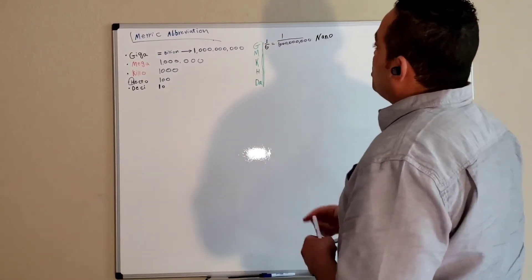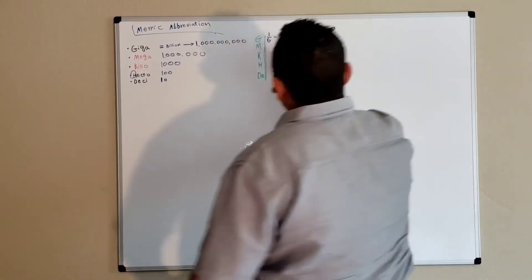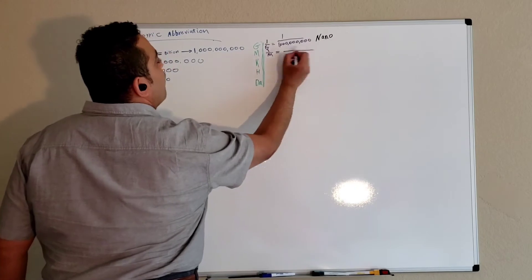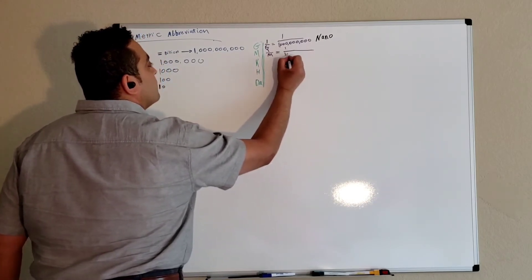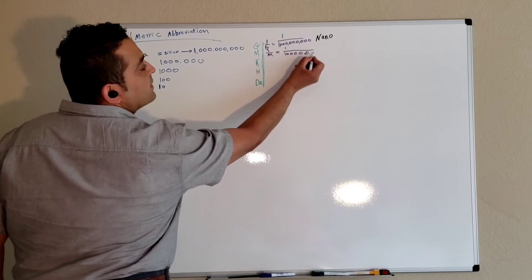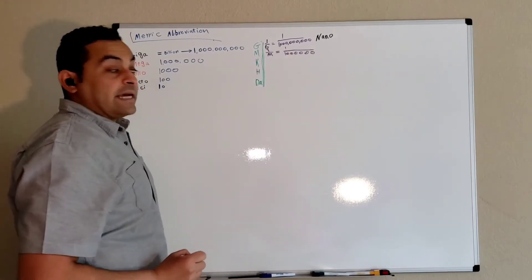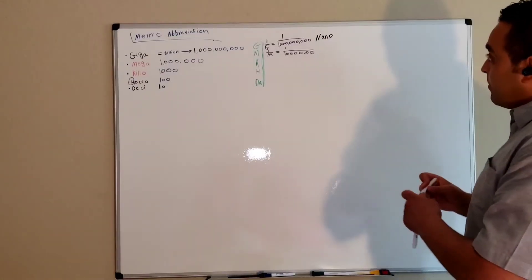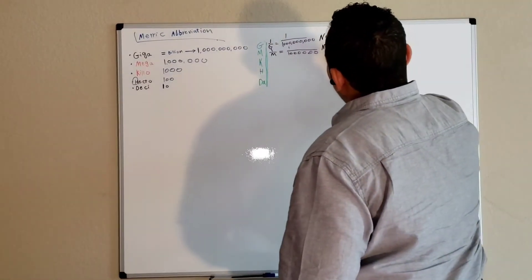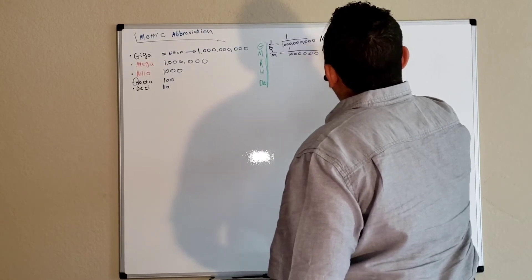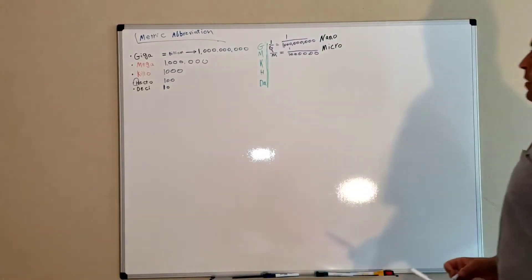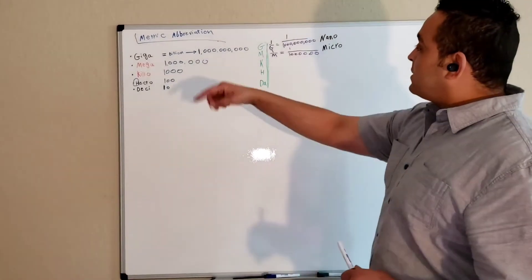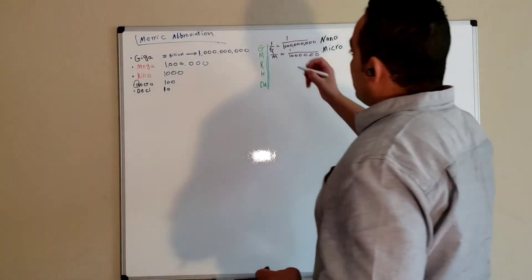Another abbreviation is one over mega, which equals one over million. Million has six zeros. This abbreviation is called micro.